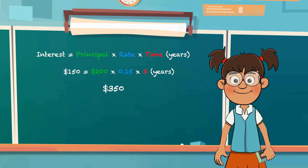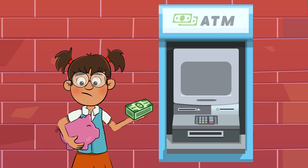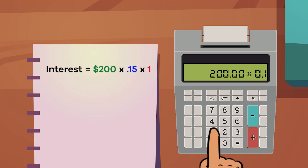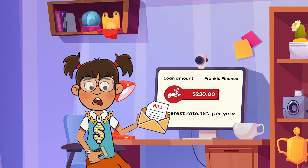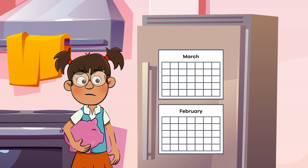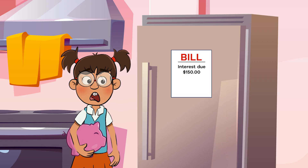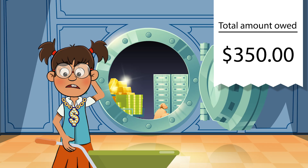Isn't interest cool? Just remember that the opposite is also true. If Frankie borrowed $200 instead of saving it, at a rate of 15% per year, she would owe $30 more than the original amount she borrowed — so she would owe $230, even though she only borrowed $200. And if it took her five years to pay the loan back, she would be responsible for paying an additional $150 in interest, which means she would have to pay her lender $350 total.